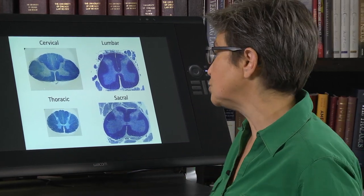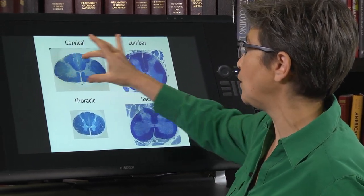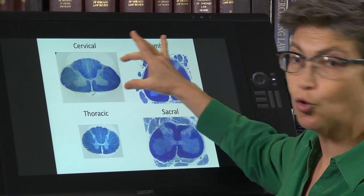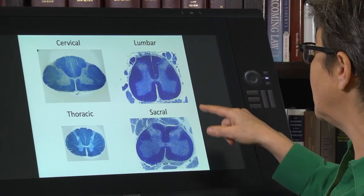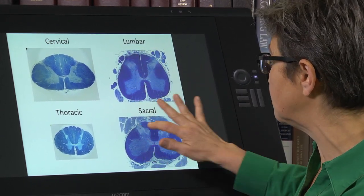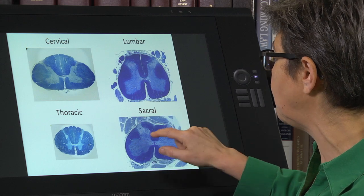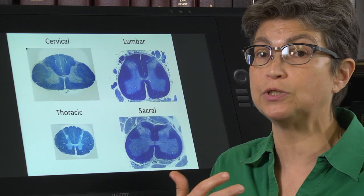There are other features. So the ovaloid shape of the cervical cord is quite distinctive. The square shape of the lumbar cord, the round sort of almost teardrop shape of the sacral cord, and the round shape of the thoracic cord, these are all somewhat distinctive.